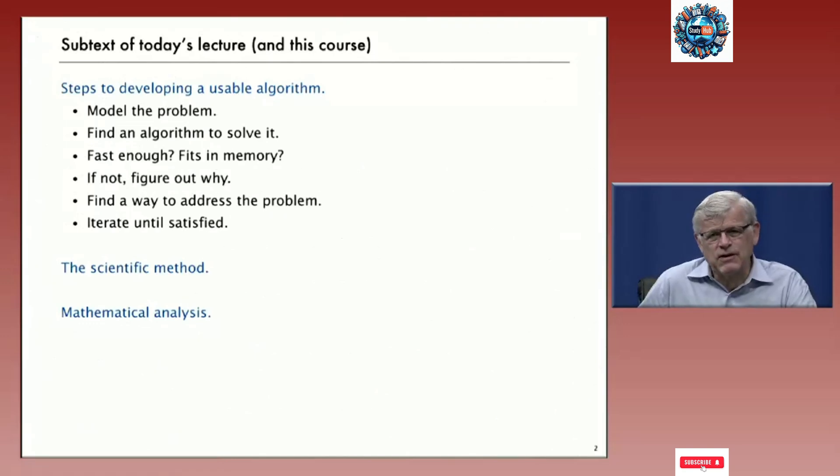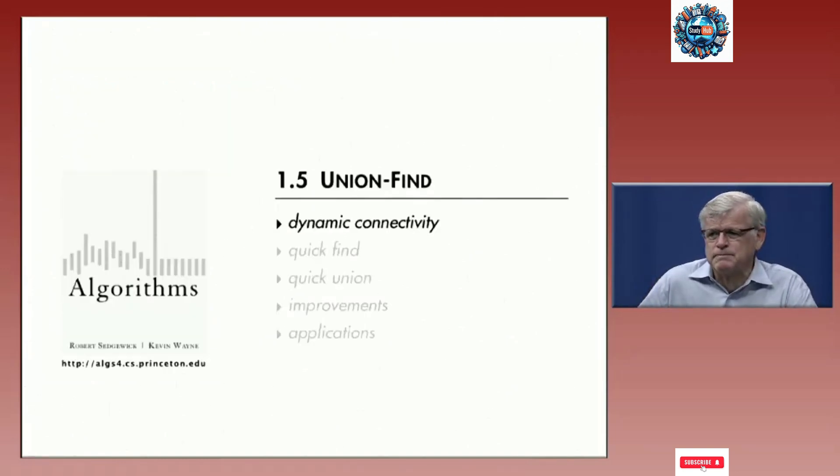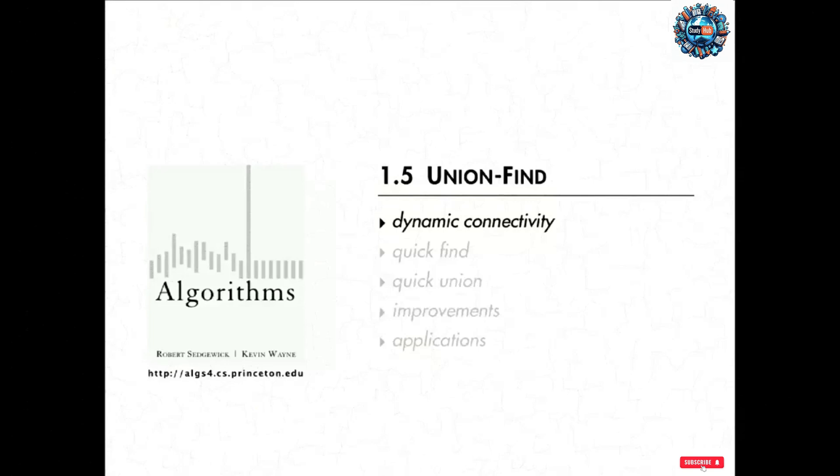This is a scientific approach to designing and analyzing algorithms where we build mathematical models to try to understand what's going on and then we do experiments to validate those models and help us improve things. So first we'll talk about the dynamic connectivity problem, the model of the problem for Union Find.